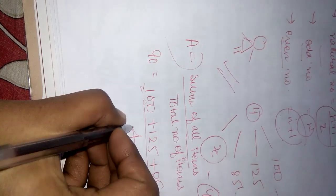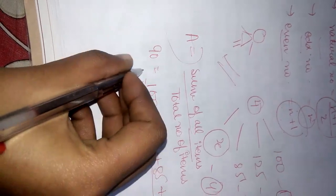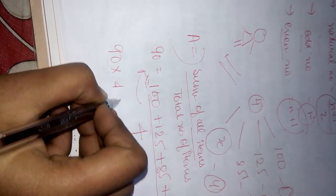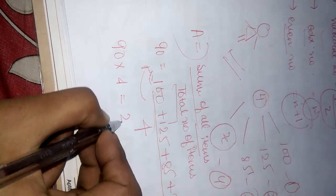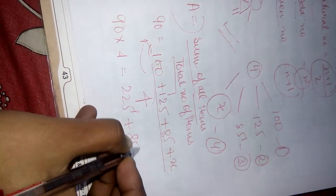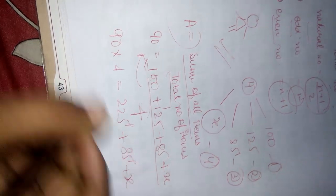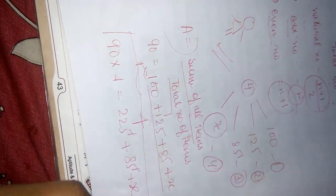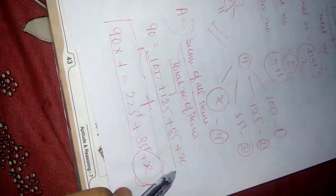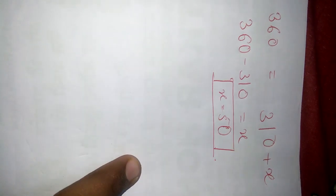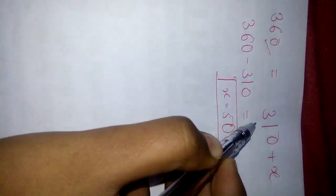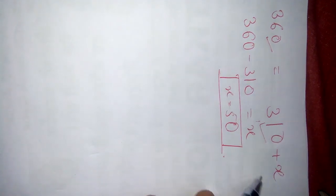Then we will, it is in division, so it will go and multiply. 90 into 4 is equals to, this plus this, 225 plus 85 plus X. Now we will solve this equation. After solving the equation, 90 into 4 is equals to 360. 225 plus 85 is equals to 310 plus X.